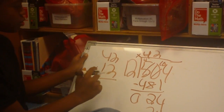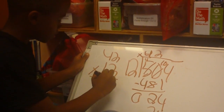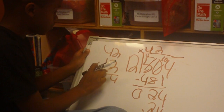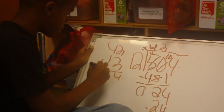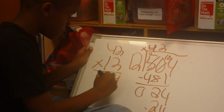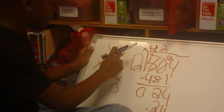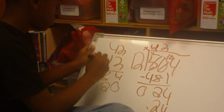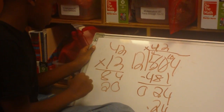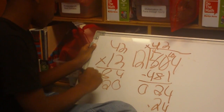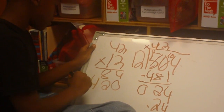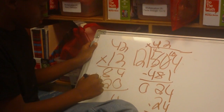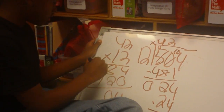2 times 2 will be 4. 2 times 2 gives me 8. It gives me 0. 2 times 1 is 2. 4 times 4 is 4. Add it. That's 4. 8 plus 1 is 10.